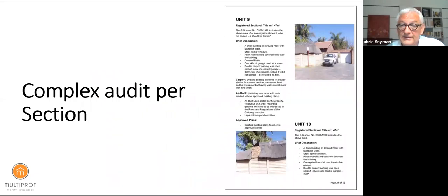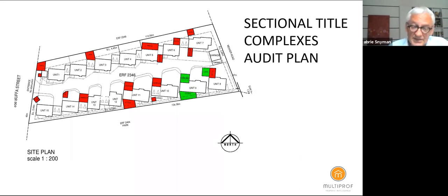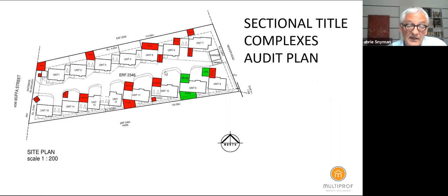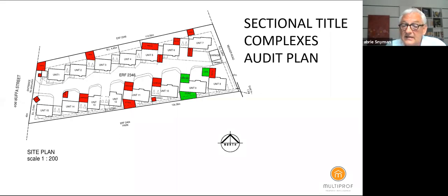The complex audit is done for each section individually. To show an example: all of the red and green in one complex we dealt with was problematic and needed attention. In a complex with 32 units, 28 of them needed attention. This is a very common thing — the plans have not been kept up to date, and a laissez-faire attitude was used by trustees. Some of these problems were created 25 years ago by trustees who are long gone.